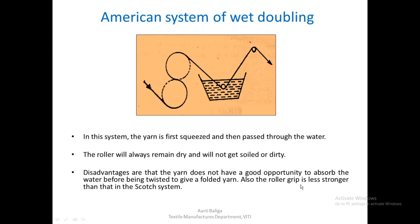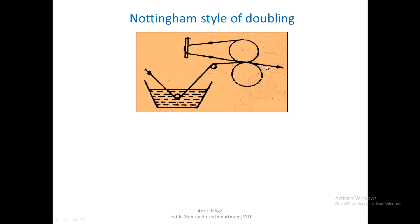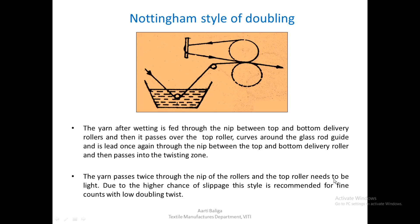In the Nottingham style of wet doubling, the yarn passes through water first and then through the nip of the top and bottom delivery rollers, returns back around a glass rod, and is passed through the roller nip a second time before entering the twisting zone. Because the yarn passes twice through the nip, the top roller needs to be light due to the high chance of slippage. This style is recommended for fine counts with low doubling twist.